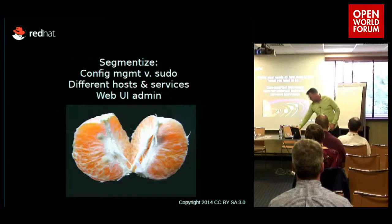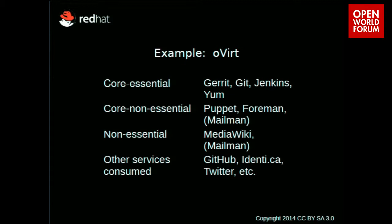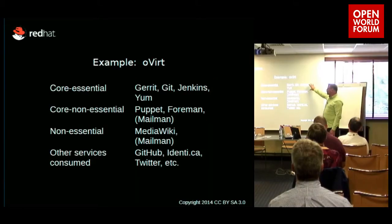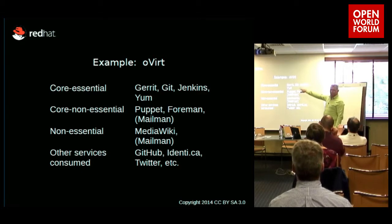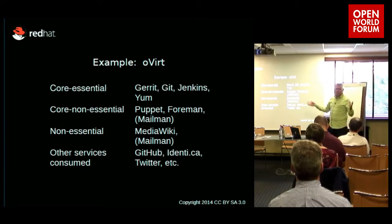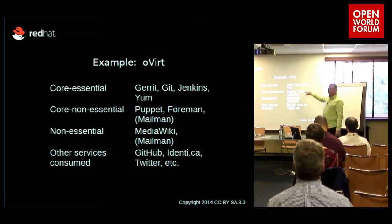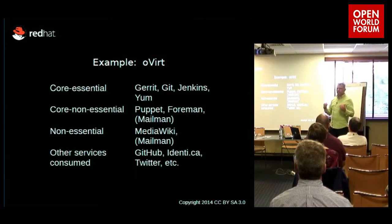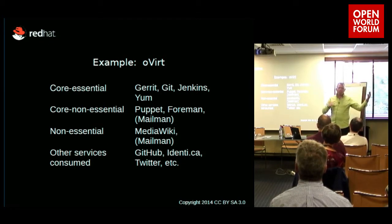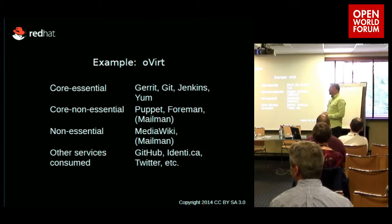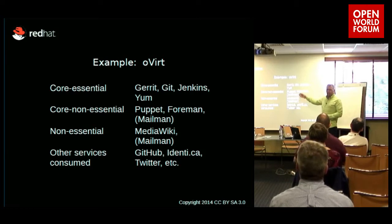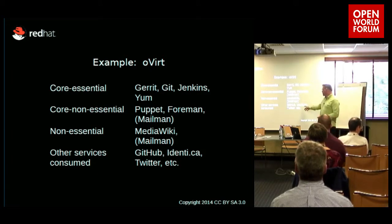Here's an example breakdown from the oVirt project. Their core essential tools include Gerrit for git visualization and Jenkins for continuous integration, package management, and Puppet and Foreman for running all the servers — though they could use Ansible instead, as long as it's something they can access and run themselves. Mailman is in two locations because mailing lists are important, though it's not necessarily important to run them all the way down to bare metal — you could run them in the cloud depending on your cost-benefit. MediaWiki is a great tool for documentation but not the only option. Tools like GitHub and Twitter are consumed at the edges to give the project a little more reach into those different areas.